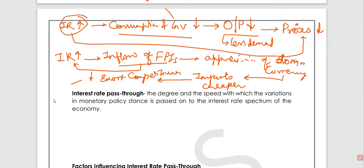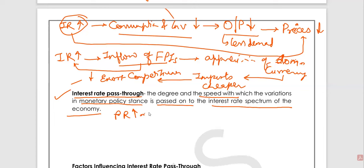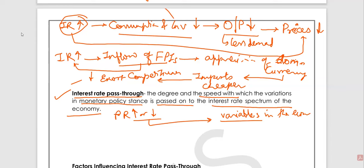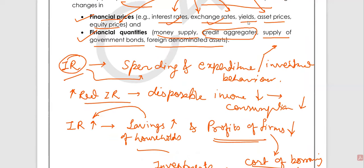Next comes the interest rate pass-through term. It is the degree and the speed with which variations in monetary policy rates are passed on to the interest rate spectrum of the economy. That means if we have changed the policy rates, how fast they are being converted into other economic variables such as the prevailing interest rates, exchange rates, yields, asset prices, equity prices, money supply aggregates, credit aggregates, supply of government bonds, and foreign denominated assets.